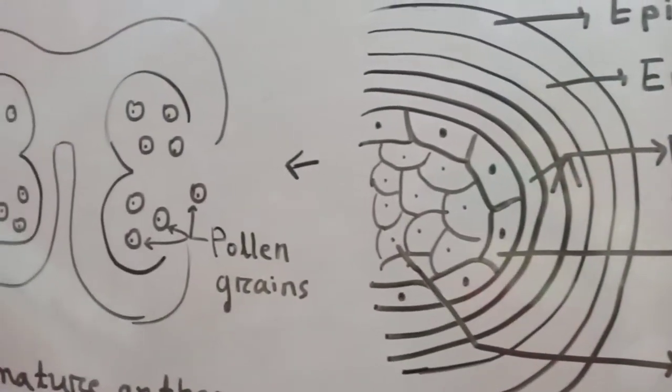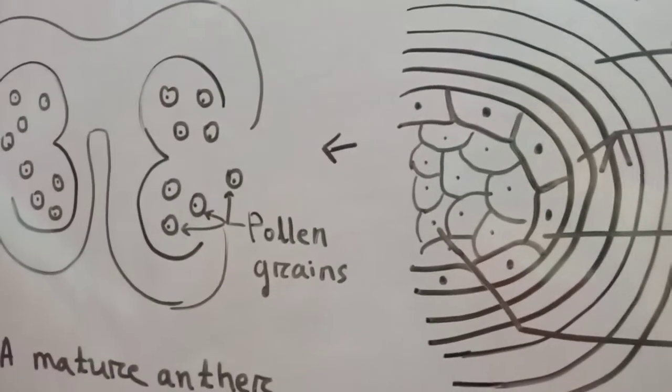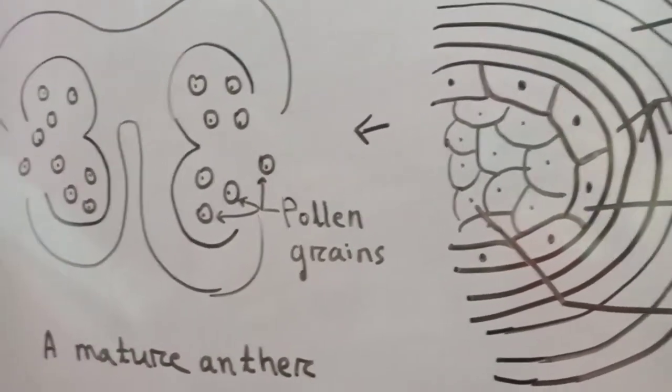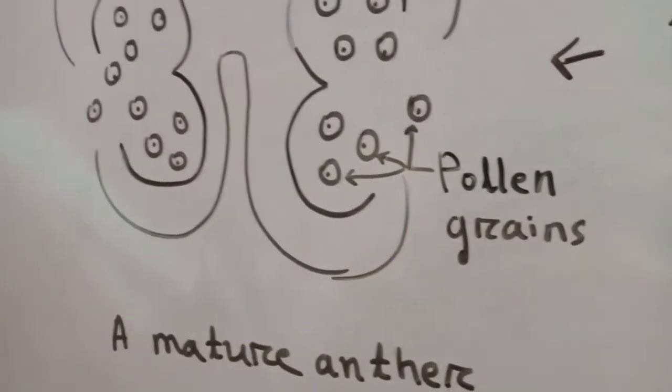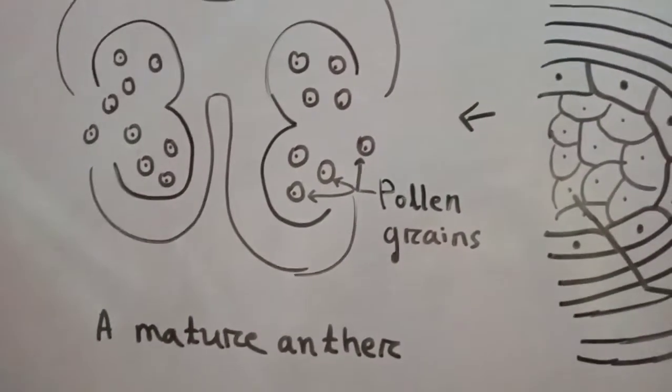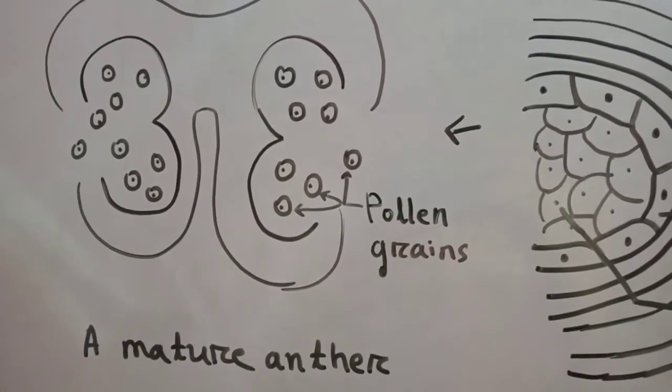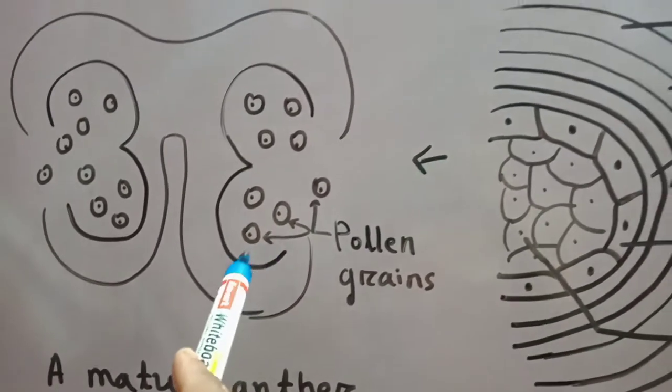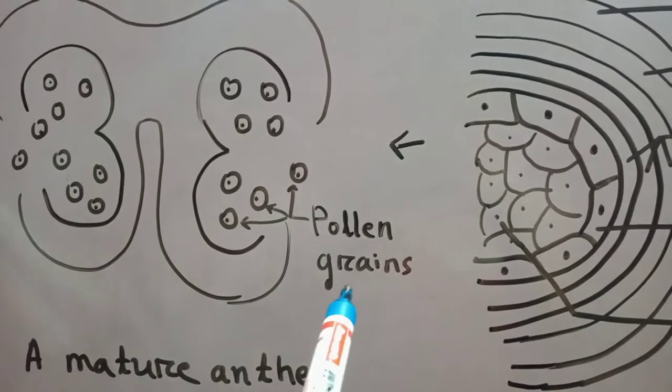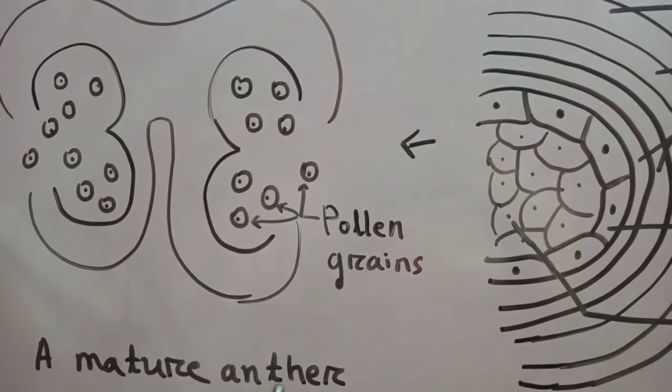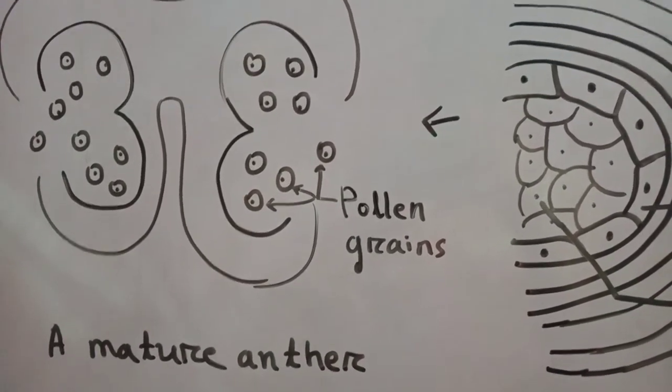As the anther matures and dehydrates, the microspores dissociate from each other and develop into pollen grains. This process of formation of microspores or pollen grains is known as microsporogenesis.